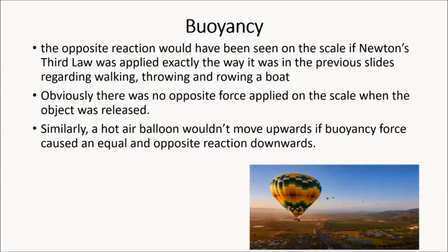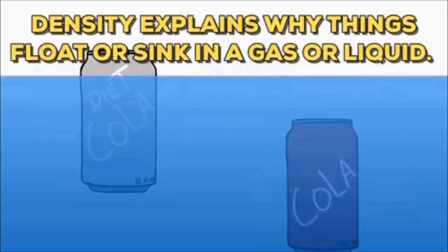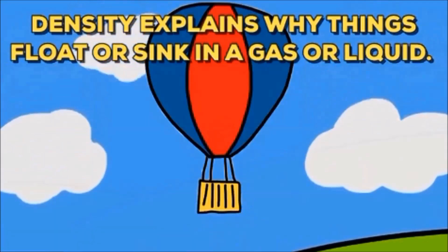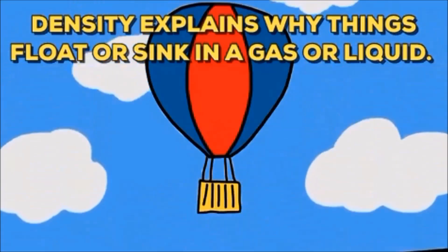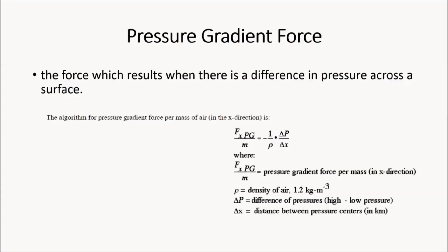Obviously there was no opposite force applied on the scale when the object was released. Likewise, a hot air balloon wouldn't move upwards if the buoyancy force caused an equal and opposite reaction downwards. A pressure gradient force is the force which results when there is a difference in pressure across a surface.